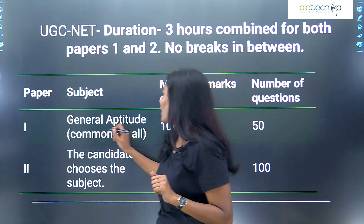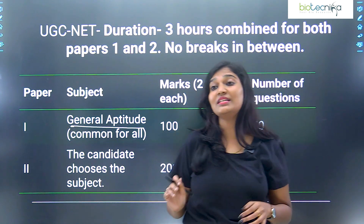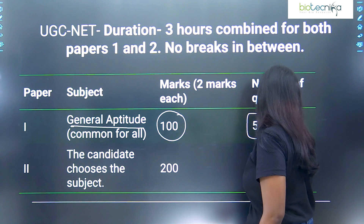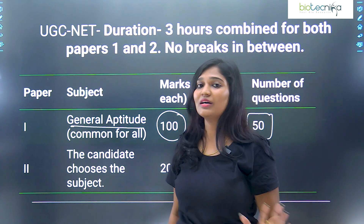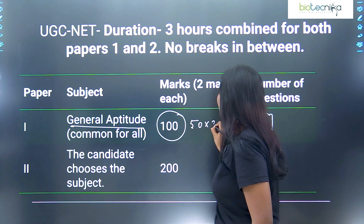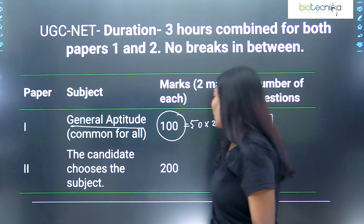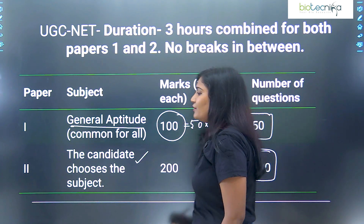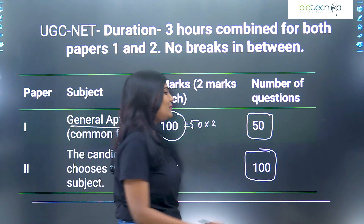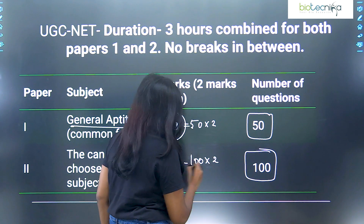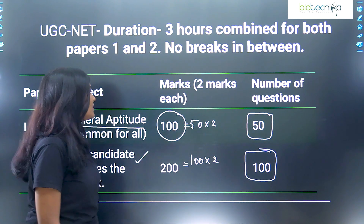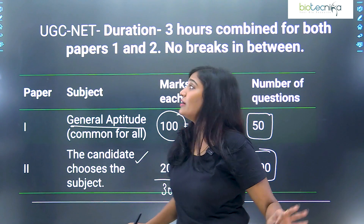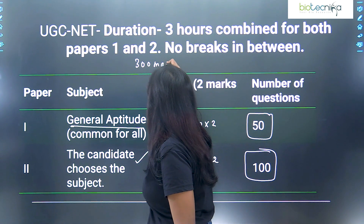In UGC NET: Paper 1 is general aptitude with 50 questions, each carrying two marks, so 50 into two gives 100 marks in Paper 1. Paper 2 covers any of the 81 subjects with 100 questions, each correct answer worth two marks — 100 into two gives 200 marks. So the total is 200 plus 100, which is 300 marks. Previously I told you CSIR NET is 200 marks; here UGC NET is 300 marks. The duration is also three hours, same as CSIR NET.